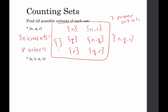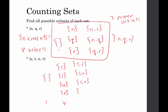What about when we have four elements? We have our empty set, and we have four sets that contain one element each. Now we need the sets containing two elements: we have {s,t}, {s,u}, {s,v}. We don't want to do {t,s} because it's the same as {s,t}. So we also do {t,u}, {t,v}, and lastly {u,v}.